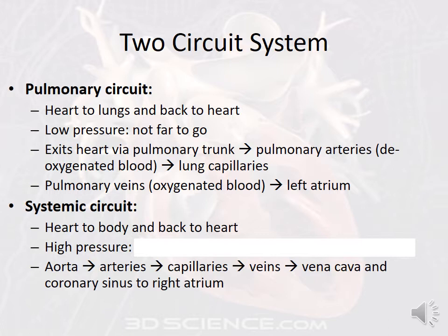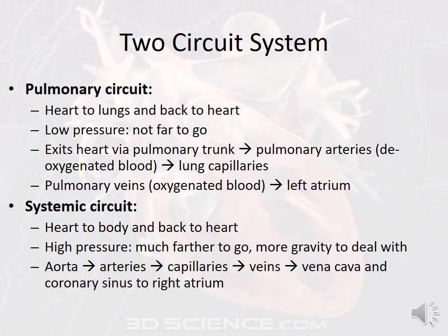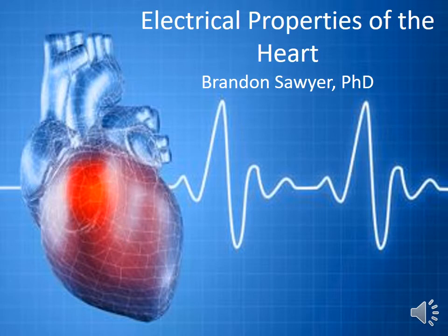The systemic circuit goes from the heart to the body and back — very high pressure, much further to go, much more gravity to deal with. We have to get blood all the way back from the feet up to the heart. Blood exits the left ventricle through the aorta, to arteries, to capillaries, to veins, back to the vena cava, and then to the coronary sinus in the right atrium. Now we'll jump right into the next set of notes: the electrical properties of the heart.